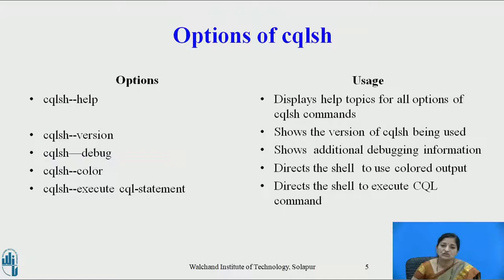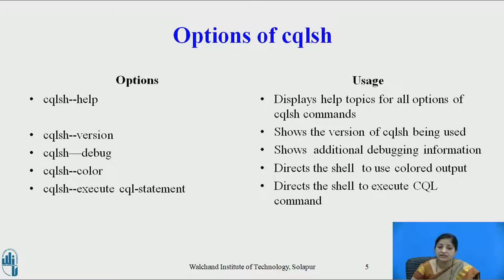Now let's see some of the options of this shell. Help — it displays help topics for all options of CQLSH commands. Version — shows the version of the shell being used. Debug — shows additional debugging information. Color — it directs the shell to use colored output. On the contrary, if we use no color, then it will direct the shell not to use colored output.